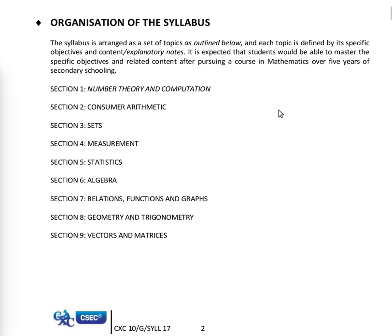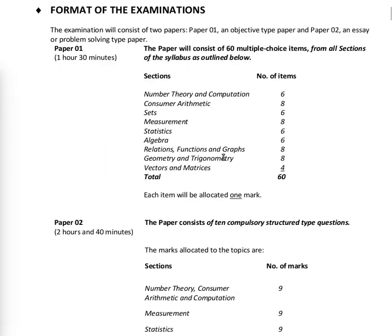The syllabus has nine sections — I remember the previous syllabus had ten sections, now they've reduced it to nine. You have: Number Theory and Computation, Consumer Arithmetic, Sets, Measurement, Statistics, Algebra, Relations Functions and Graphs, Geometry and Trigonometry, and Vectors and Matrices. Those are the nine sections of the new syllabus.